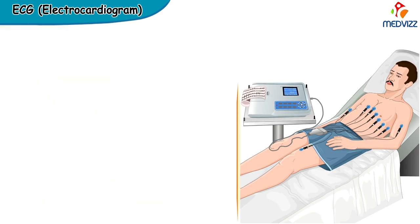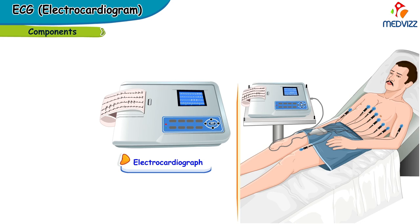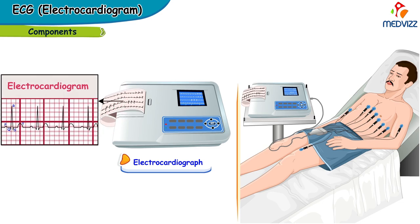Talking about the components of the ECG, the machine which records the graph on the grid paper is called an electrocardiograph and the recording is called an electrocardiogram. It is abbreviated as ECG, and in some countries it is abbreviated as EKG. They are both synonymous.